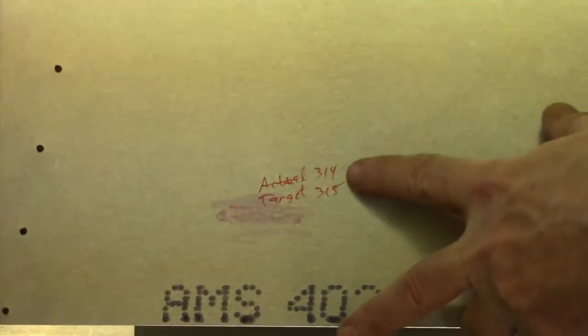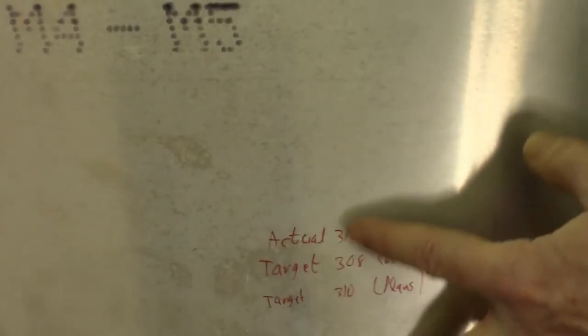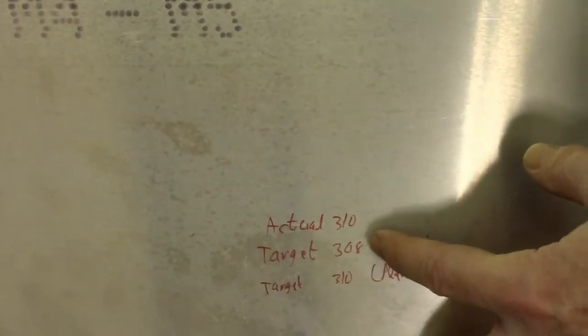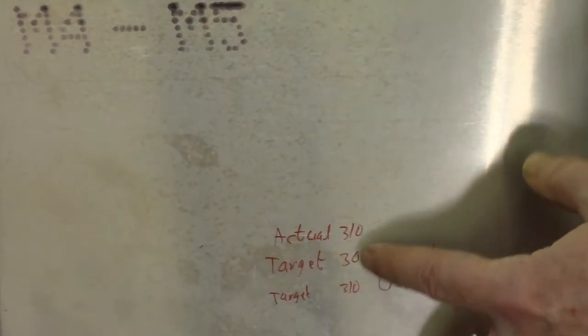So for this side, target was 3-15, actual 3-14. And for this side, actual was 3-10. Target, according to my drawing, was 3-08. But then in the plans, it actually has 3-10.